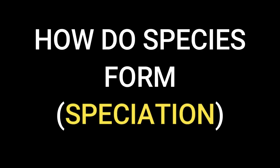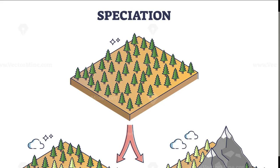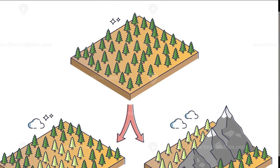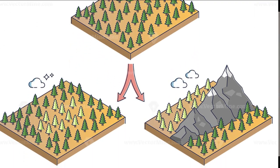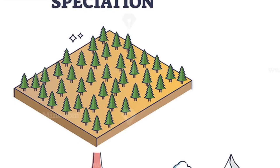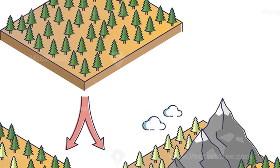A student asked me: how can I do a small experiment to show how new species form? The process of speciation means the formation of new species. Species will form in two ways — allopatric speciation or sympatric speciation. Today we are going to look at allopatric speciation: the formation of new species using a geographical barrier.